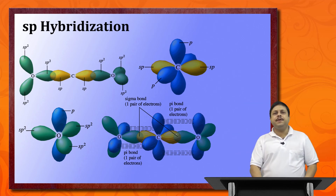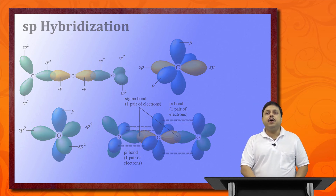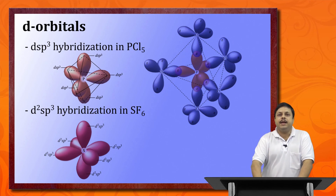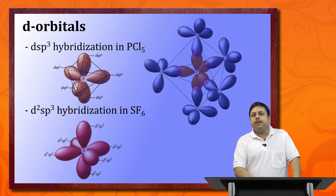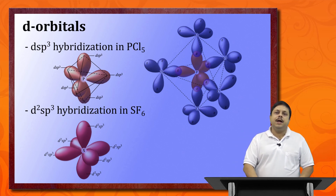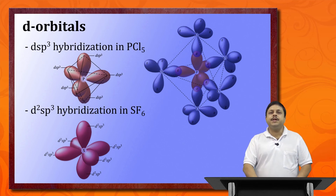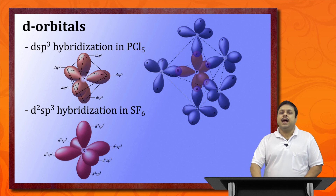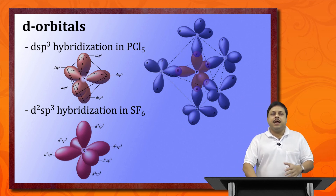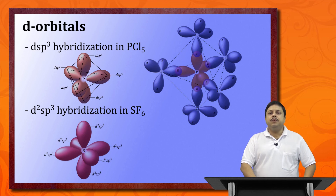Now let us move to hybridization involving d orbitals. In dsp3 hybridization — as in phosphorus pentachloride — one d, one s, and three p orbitals combine to form five hybrid orbitals that assume a trigonal bipyramidal geometry. In d2sp3 hybridization, six atomic orbitals hybridize to ultimately form six hybrid orbitals arranged in a perfect octahedral geometry. These represent higher levels of complexity associated with different molecular structures.